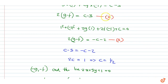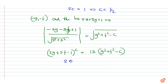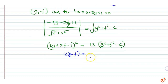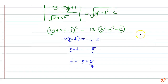Since c = 1/2, we can write from equation 2: 2g - 2f = c - 3 = 1/2 - 3. This gives g - f = -5/4, giving f = g + 5/4. Let this be equation 4.